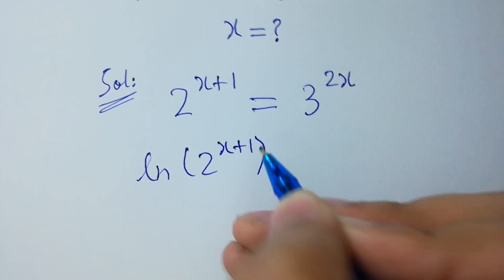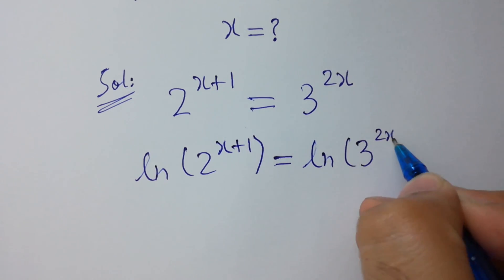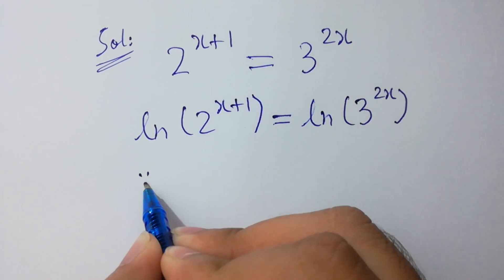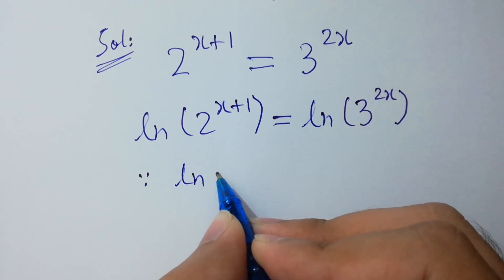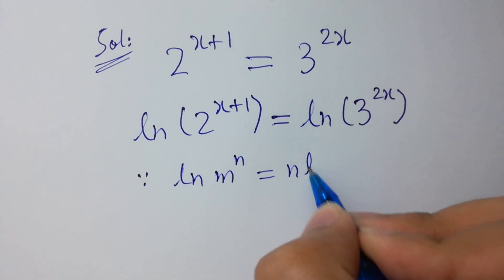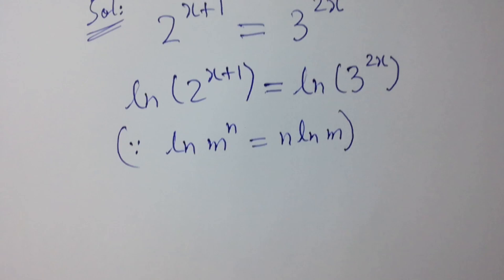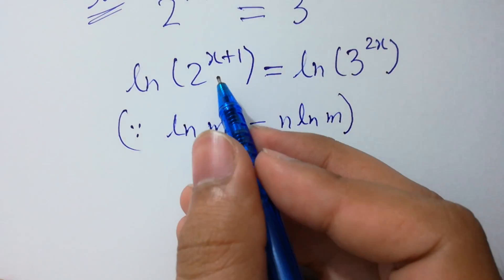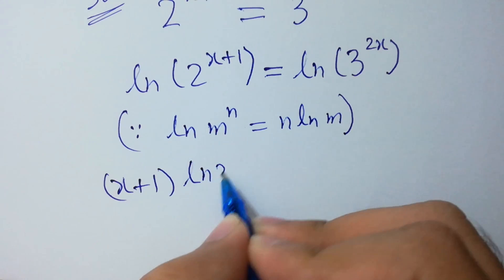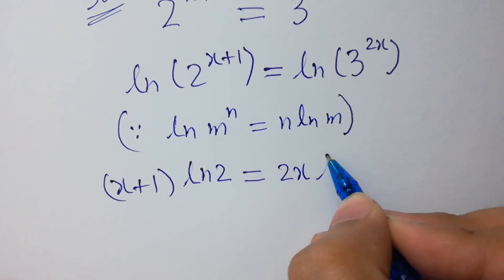Log of 2 to the power x plus 1 equals log of 3 to the power 2x. As we know that log m to the power n equals n log m, we can write here x plus 1 log 2 equals 2x log 3.